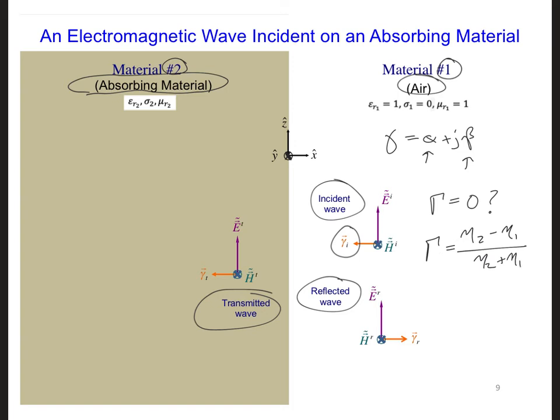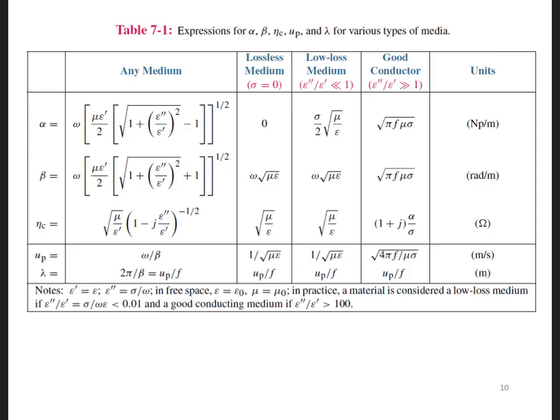To figure out if we can get a reflection coefficient of 0 between the air and the absorbing material we need to fill in some more details here. For example, we can write out the characteristic impedance of air and the absorbing material. Let's start with the air. Using table 7-1 for air, which is a lossless medium, we can see the characteristic impedance is square root of mu over epsilon. And so for air, for material one, we're going to have square root of mu naught over epsilon naught since those values correspond to free space.